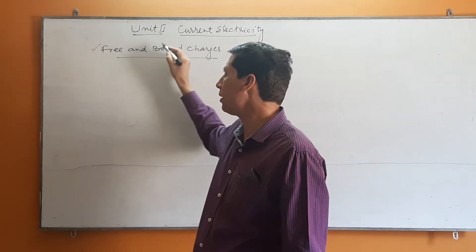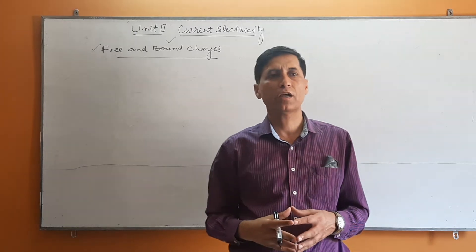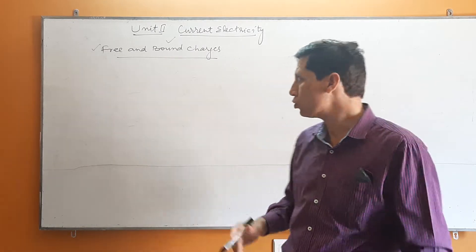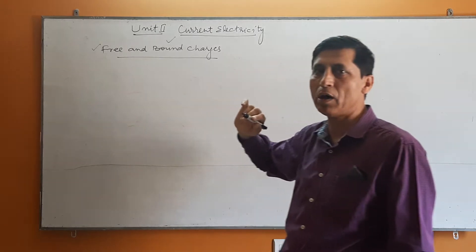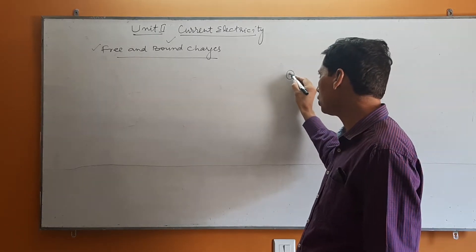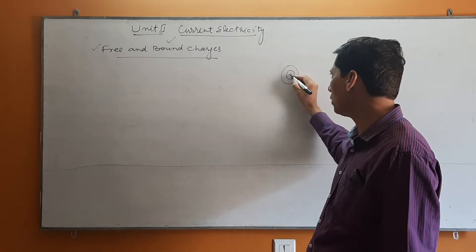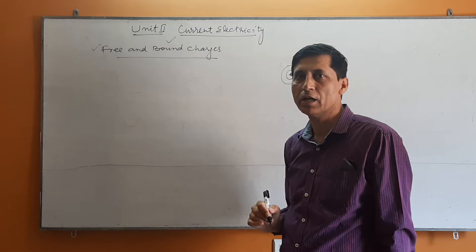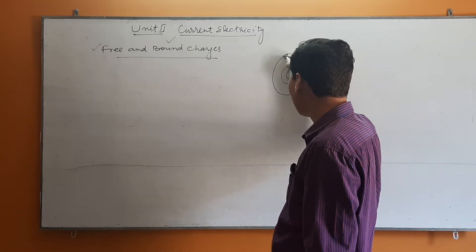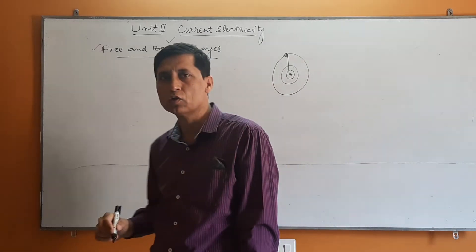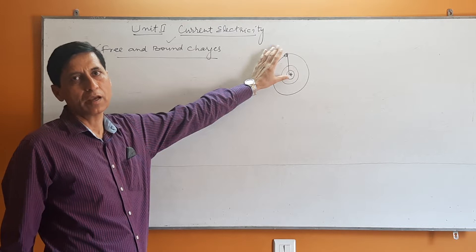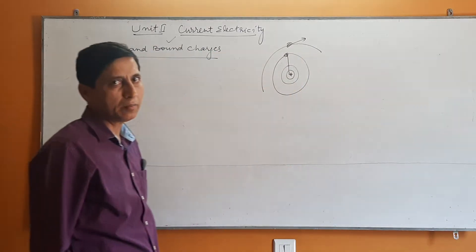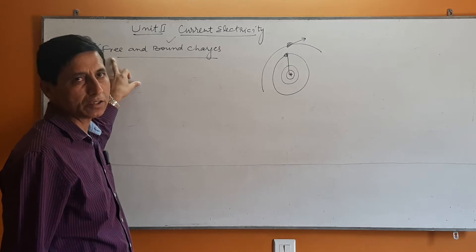First of all we will try to understand what are free and bound charges. As we know, each small particle is called an atom. Inside the atom, in the central core region, we have protons and neutrons, which is called the nucleus. Positive charges are in the nucleus, and electrons revolve in different circular orbits. Electrons that are bound with their nucleus are called bound charges. But if some electrons from the outermost orbit gain energy, they can get free from the atom — these are known as free charges.